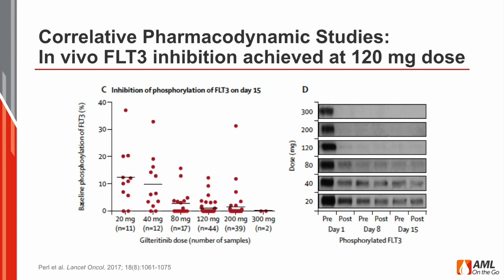Shown here are two figures illustrating the in vivo FLT3 inhibition achieved by this drug. In the figure on the left, the red dots show that 20 milligrams produced scattered FLT3 inhibition. What you want to do to get a response is thoroughly suppress phosphorylated FLT3, the marker of FLT3 activation. As we marched up dose levels, phosphorylation was suppressed, and at 200 and 300 milligrams it was suppressed in virtually all patients. The western blots on the right confirm this — marching up 20, 40, 80, 120, 200, and 300 milligrams, FLT3 activity is blanked out starting at 120 milligrams, though 80 was reasonably good.